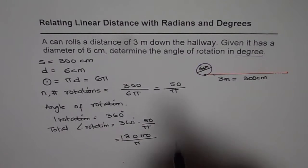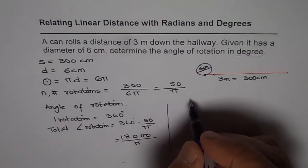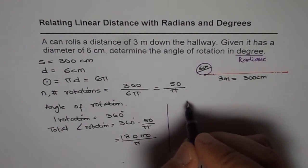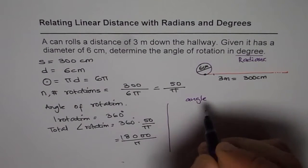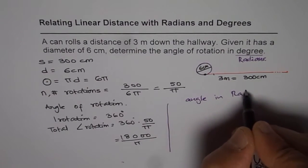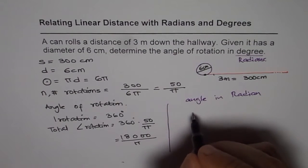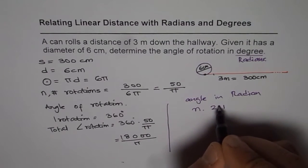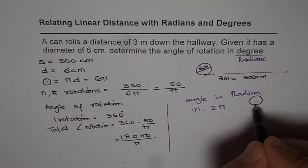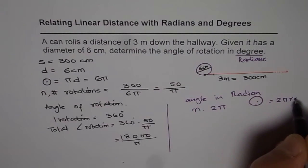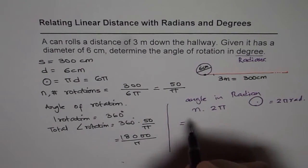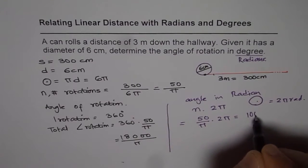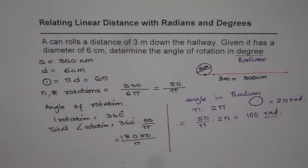There could be a variation to this question where you are asked to find the angle of rotation in radians. In that case, since one rotation equals 2π radians, the angle θ = n × 2π = (50/π) × 2π = 100 radians. So in radians the answer would be 100 radians.